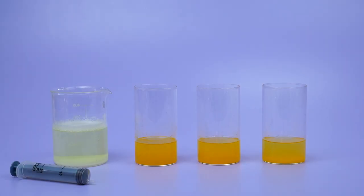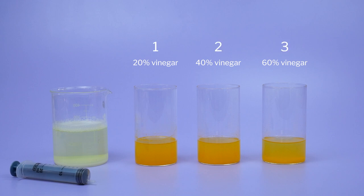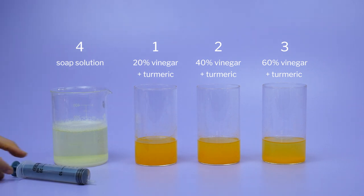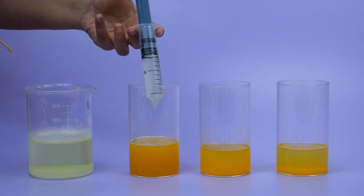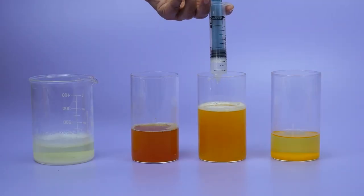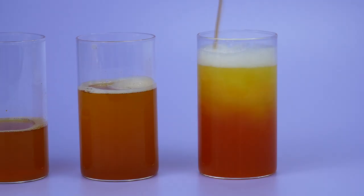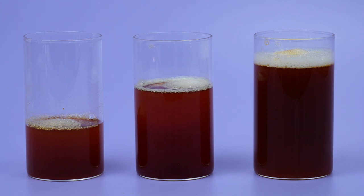We filled 3 beakers with 100 ml of vinegar solution, each of different concentrations, and numbered these beakers. We took a fixed concentration of soap solution in a fourth beaker. We added a tablespoon of turmeric to each glass of vinegar, then used a syringe to find out how much soap solution needed to be added to each vinegar solution to change its colour to red — that is, to make it basic. Findings were noted in a table.